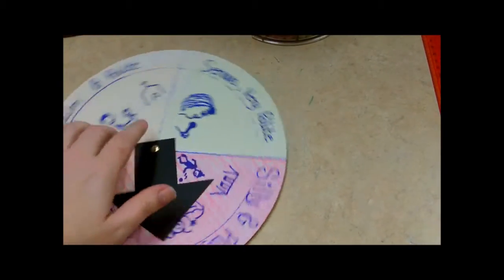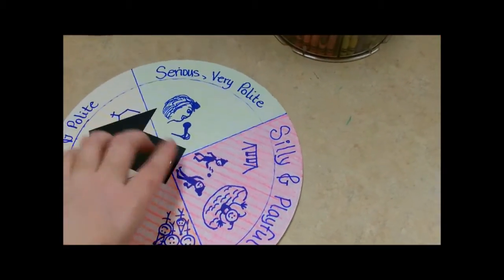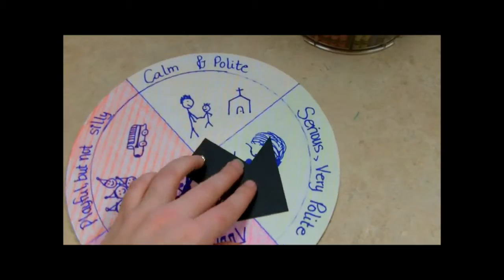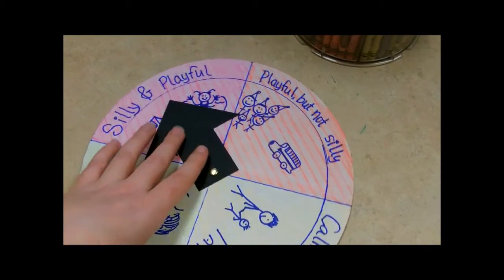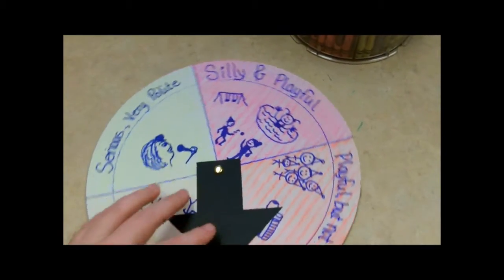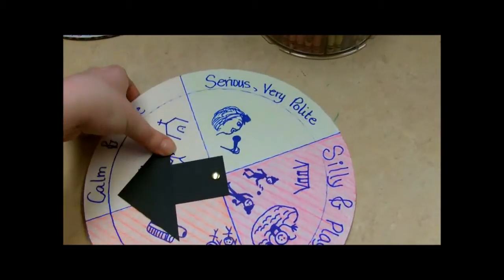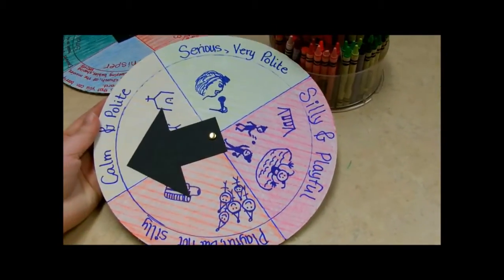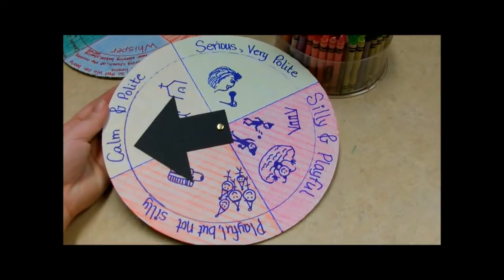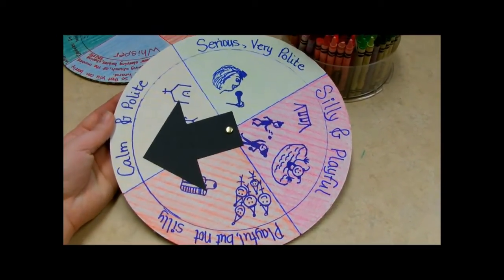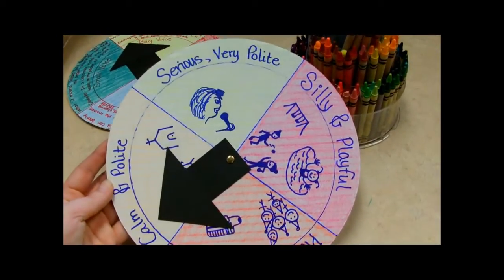And here it is, we've got Serious and Very Polite, Calm and Polite, Playful but Silly, and Silly and Playful. Those are the different tones, some of the different tones, but those are some of the four tones that you may need to work with a child on making sure that they are using the appropriate tone for the appropriate situation.